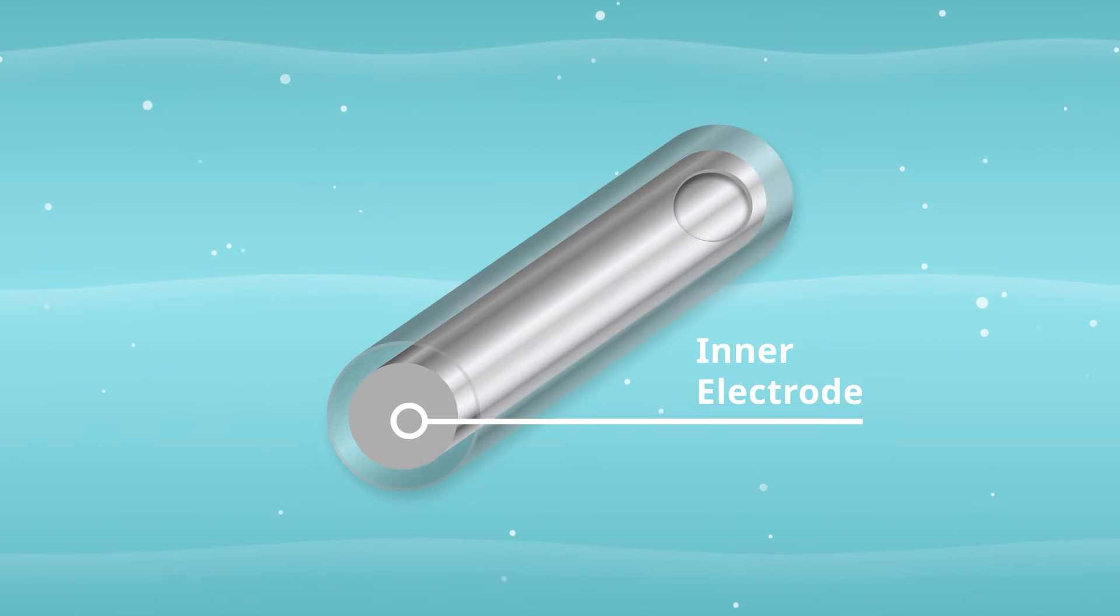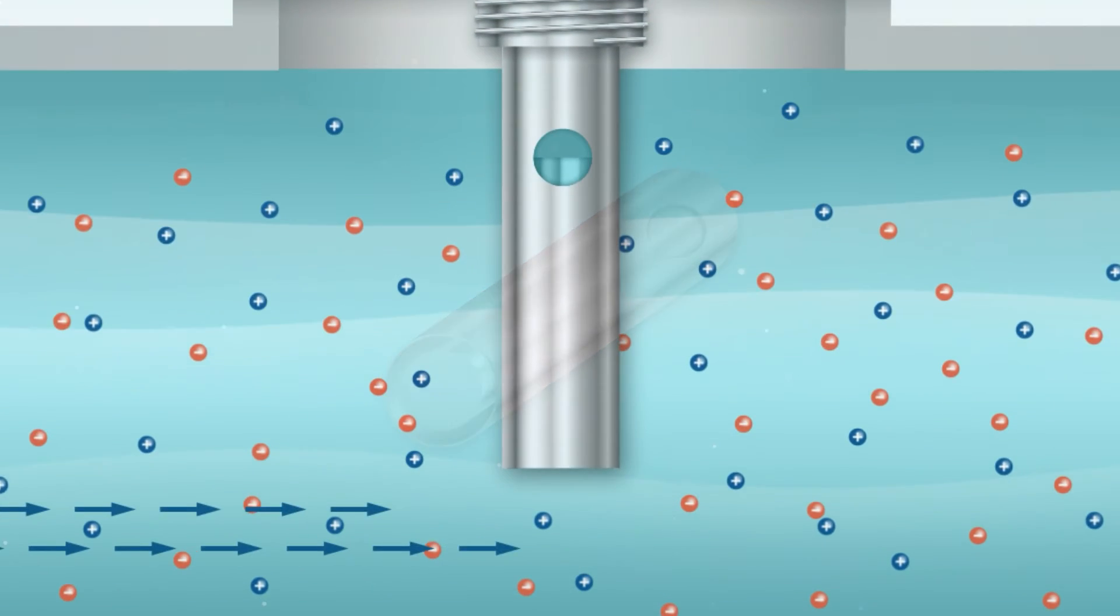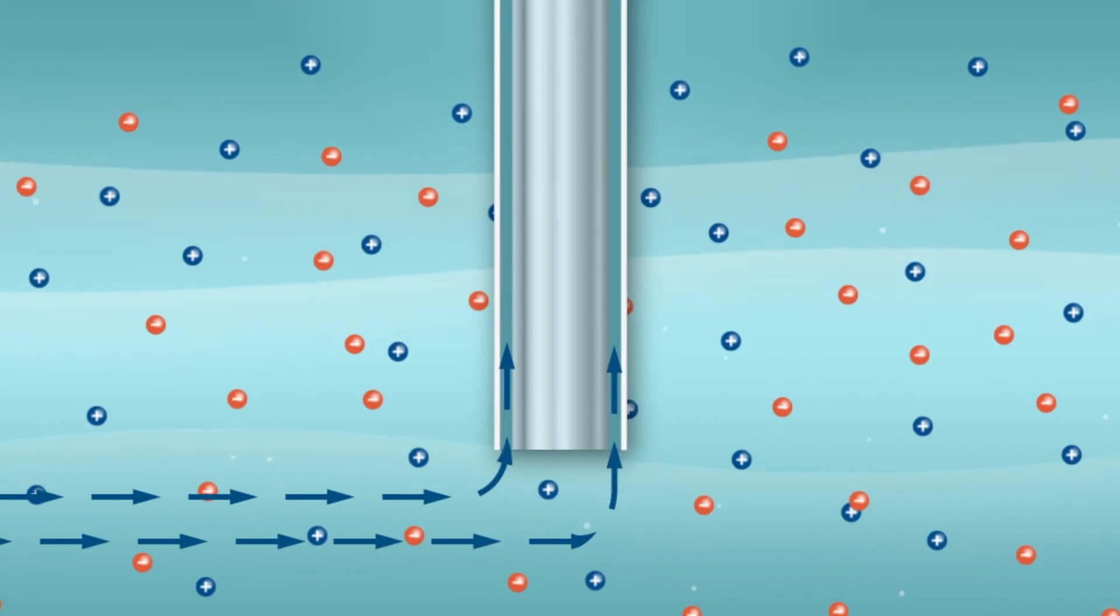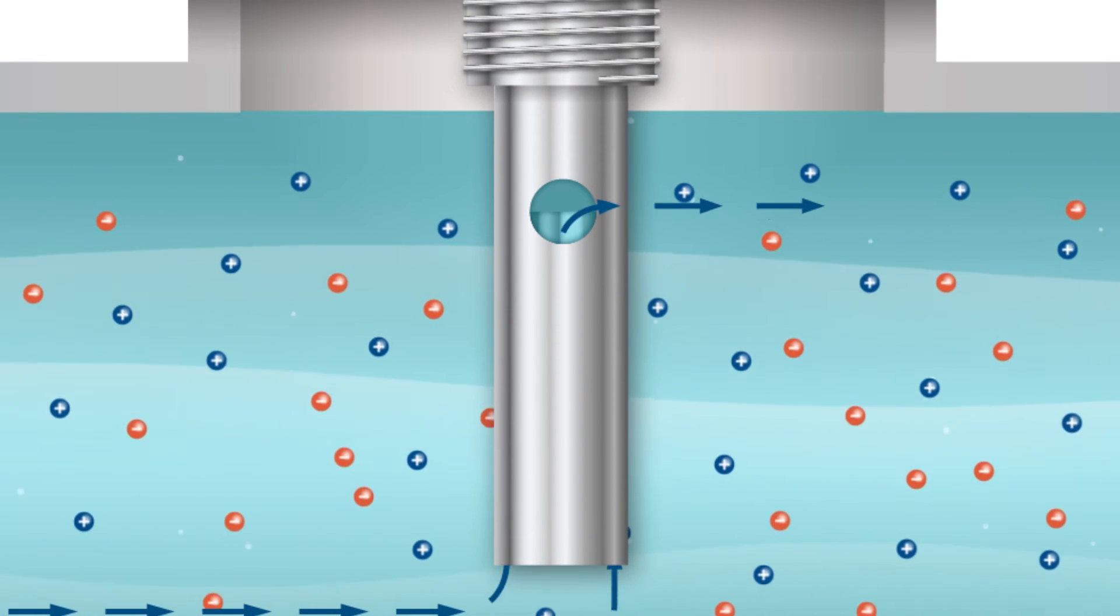The inner electrode region contains an RTD for automatic temperature compensation since fluctuations in temperature will impact conductivity readings. When immersed in process fluid, the fluid flows into the annular region between the inner and outer electrodes and then exits through the weep hole.